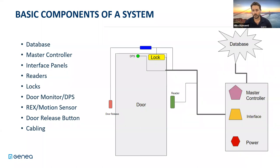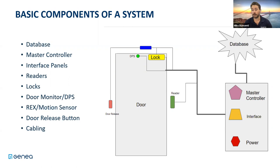The last thing on the door side is the door position switch. How do we know if the door is open or closed? That is where the DPS comes in - it's just a little magnet that will tell you whether the door is open or closed. Under certain circumstances, that's what triggers an alarm saying that the door is forced open or that the door is held open for too long and needs to be closed. Those are your door-side pieces of equipment.